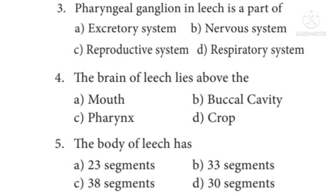Question 3: Pharyngeal ganglion in leech is a part of — Options: A. Excretory system, B. Nervous system, C. Reproductive system, D. Respiratory system. The correct answer is Option B: Nervous system.